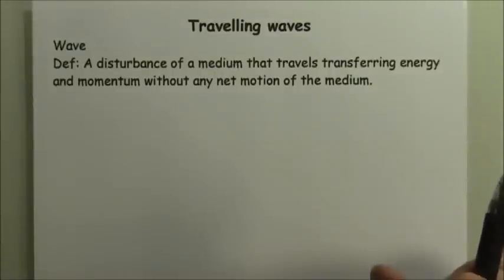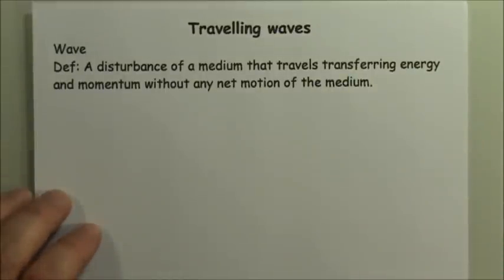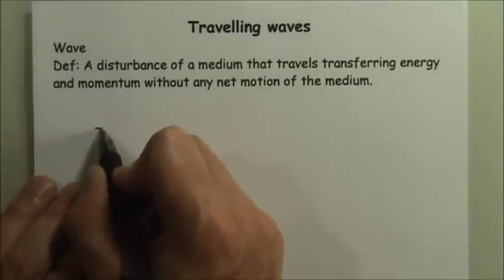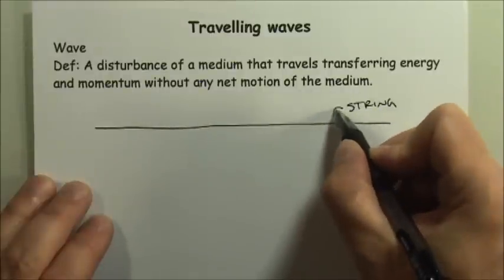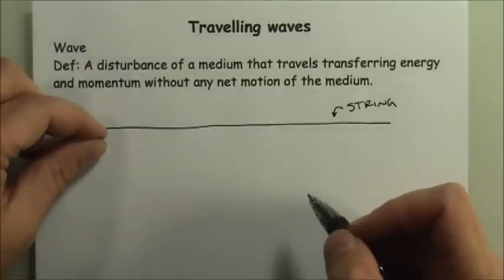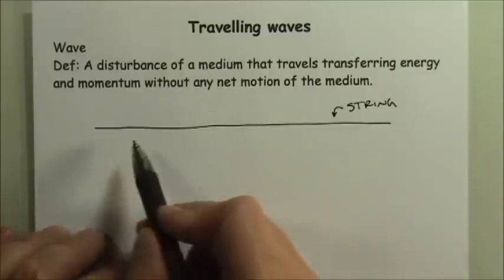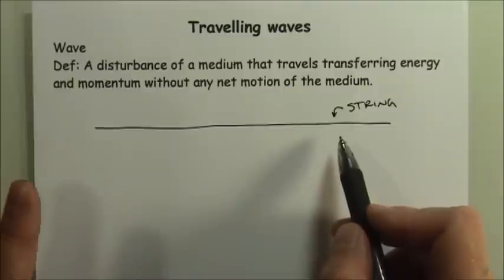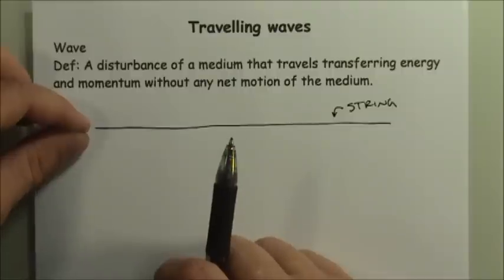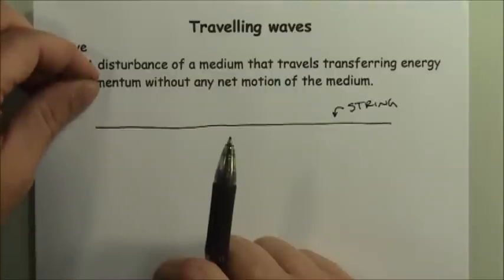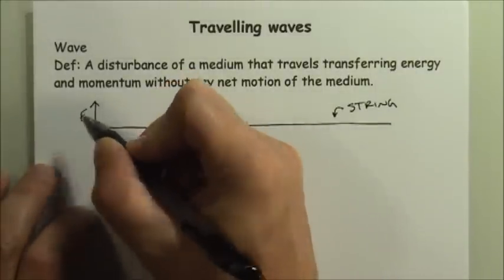Before going into the different types of waves, let's examine what causes the disturbance to move in the first place. I'll use a simple piece of string as an example — we'll tie it to some object at one end, and I'll hold the other end. I can move the string up and down, disturbing it. This is the equilibrium position where the string naturally wants to be, all forces balanced with zero net force. I'll disturb it by moving it up and then pulling it back down to equilibrium.